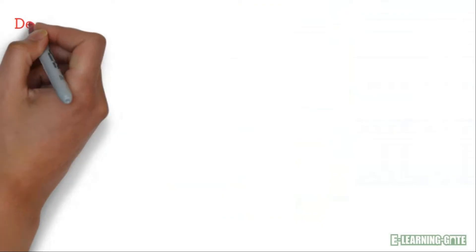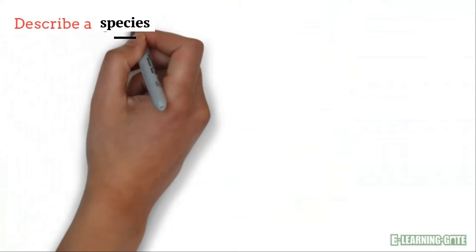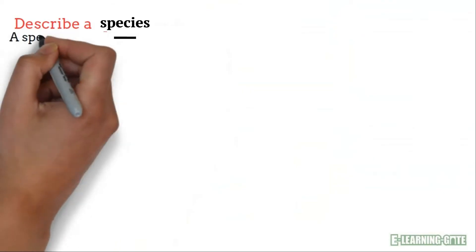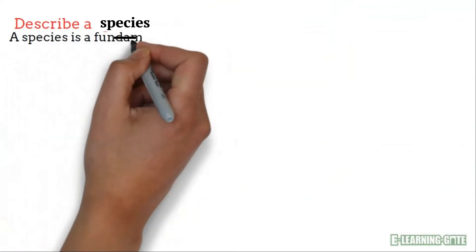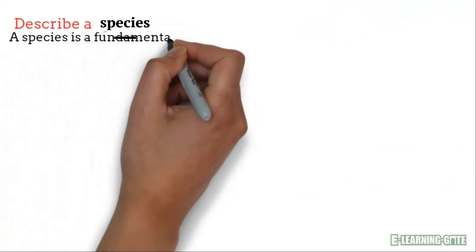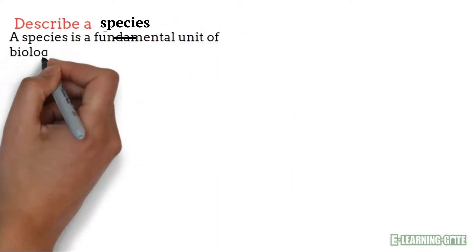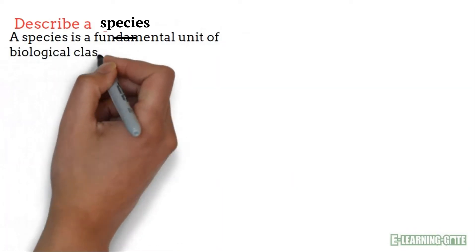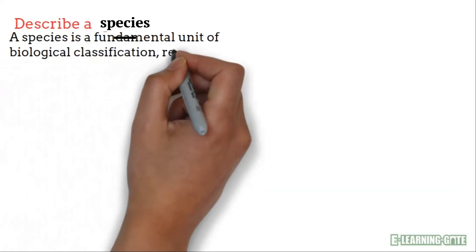Now let us see what a species is. In biology, a species is a fundamental unit of classification and represents a group of organisms that are capable of interbreeding and producing fertile offspring in nature.